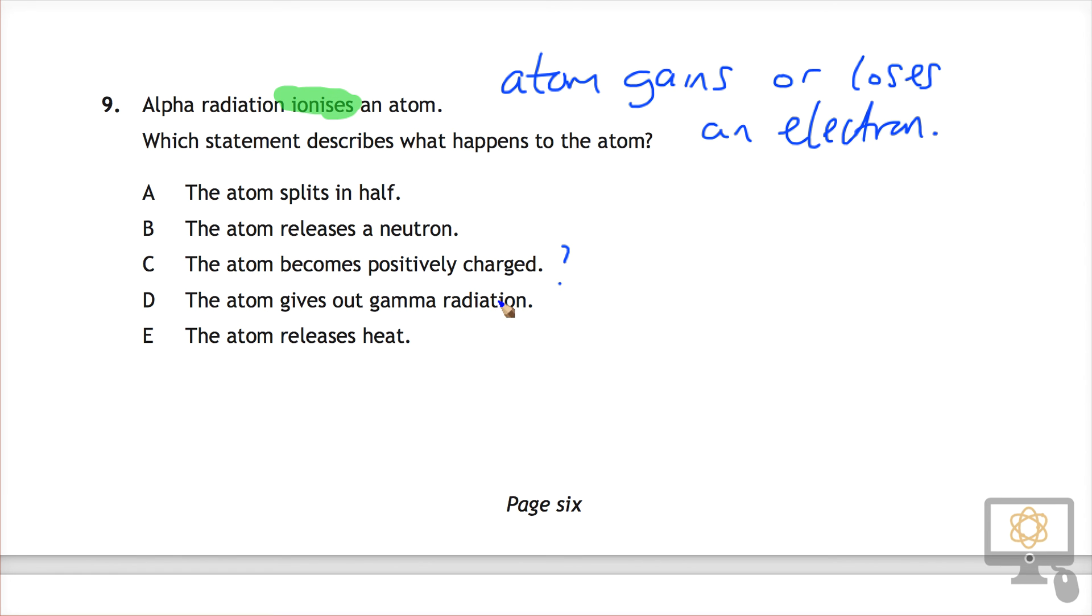D, the atom gives out gamma radiation. No, it gains or loses an electron. E, the atom releases heat. Not in this case.